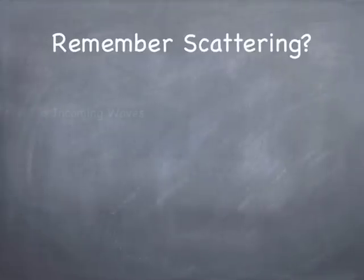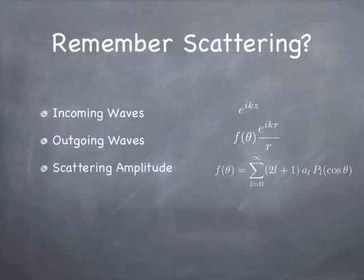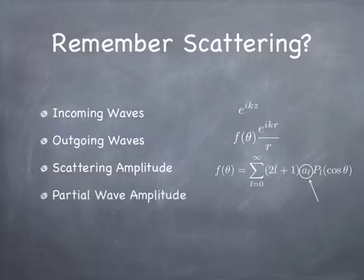Let's see what you remember from last time. We were talking about incoming waves treated as plane waves, and the outgoing waves were the consequence of scattering, going like e to the ikr over r with a theta dependence. We broke the incoming wave into angular momentum components and thereby also broke the outgoing wave into angular momentum components, ending up with an expression for the scattering amplitude in terms of partial wave amplitudes, or the a sub l's — complex numbers that tell how much of each angular momentum component is in the outgoing scattered wave function.